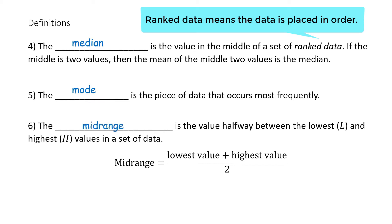The midrange is the value halfway between the lowest, represented by L, and highest, represented by H, values in a set of data. If you want the formula, it would be midrange is equal to the sum of the lowest value and the highest value divided by 2.